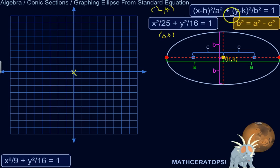So a² is 25. So for our ellipse, a is 5. So 5² is 25. b² is 16. So b is 4.